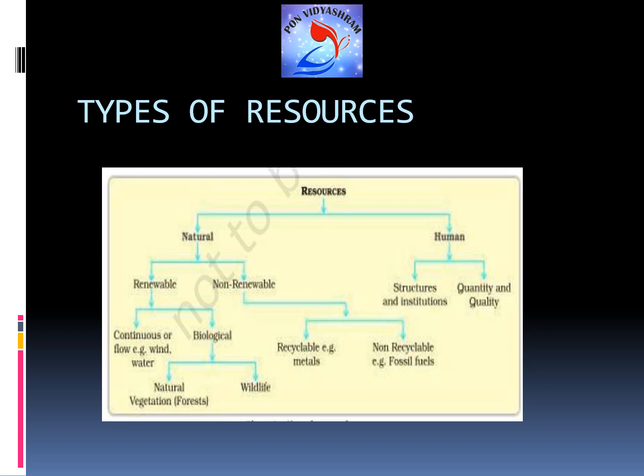The third type is human resources. Human resources refer to the potential of an individual or community to convert all available resources into more useful ones. It is only with human intervention that we convert all available resources into better ones, so humans themselves are considered an important resource.